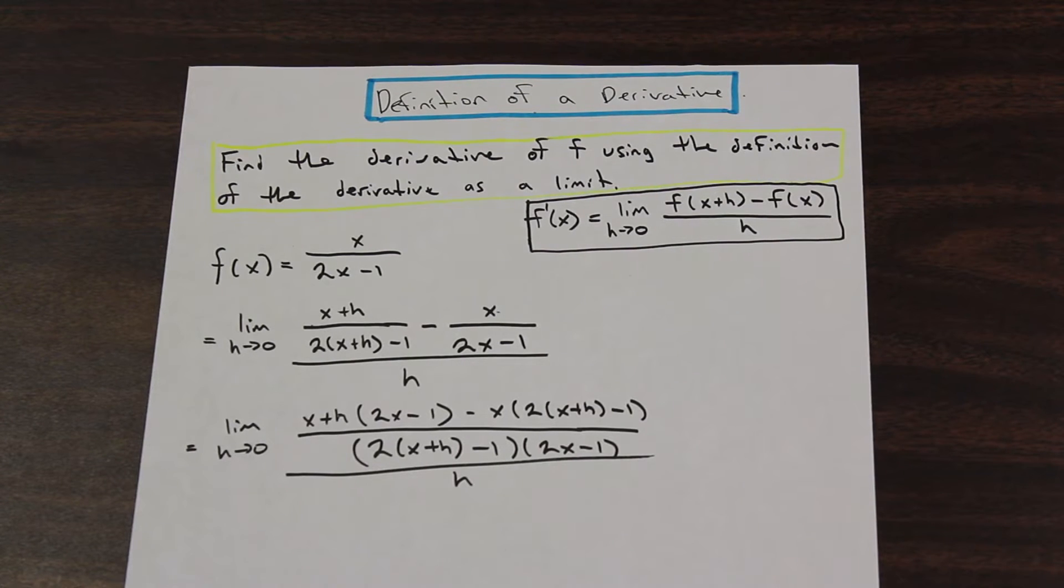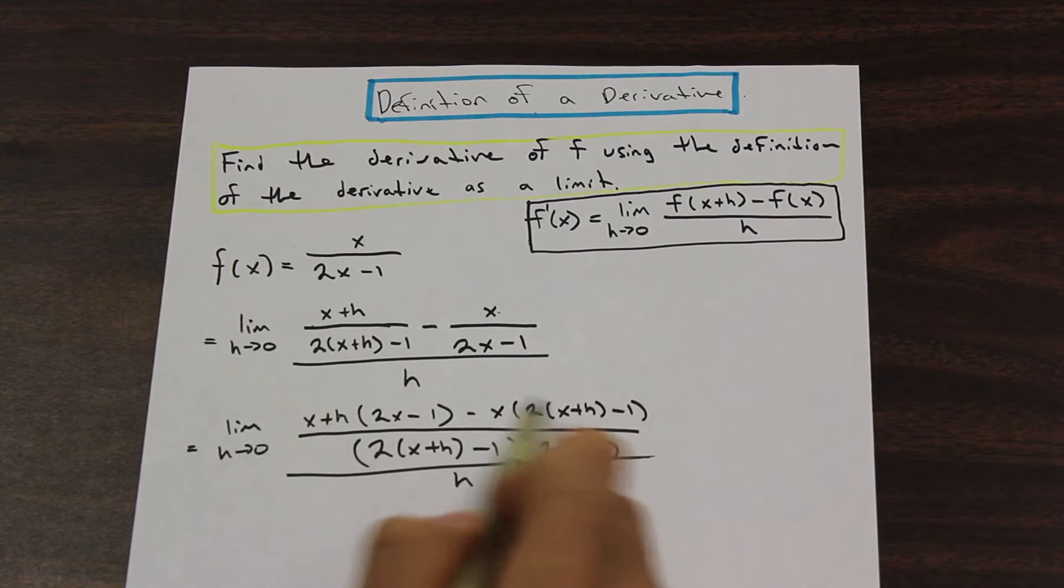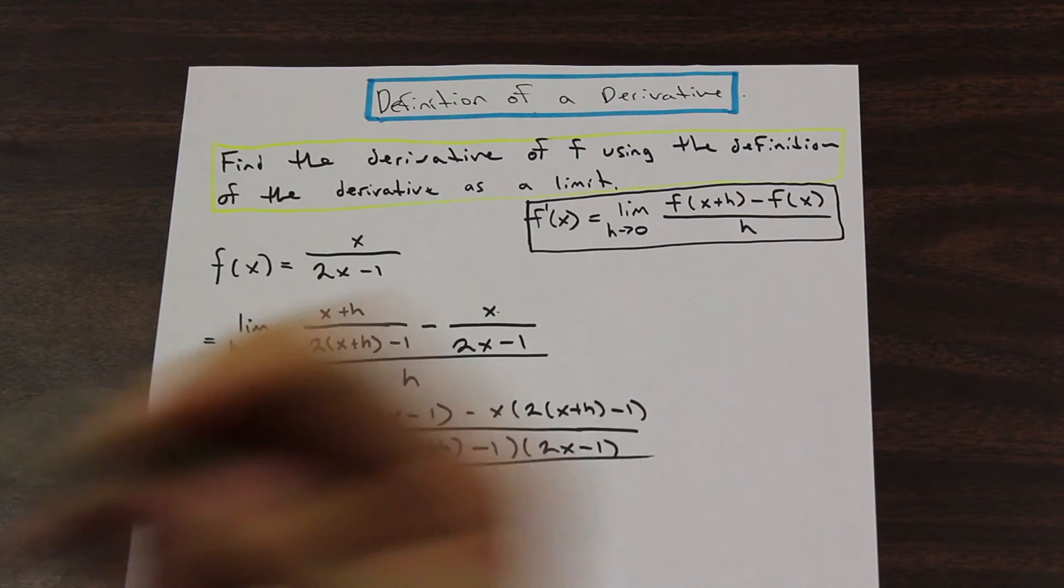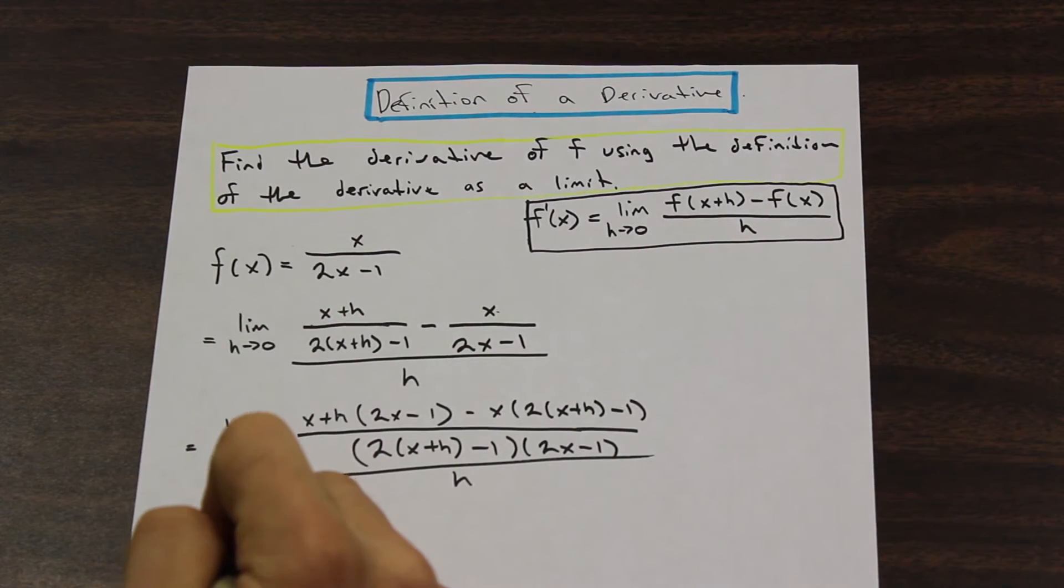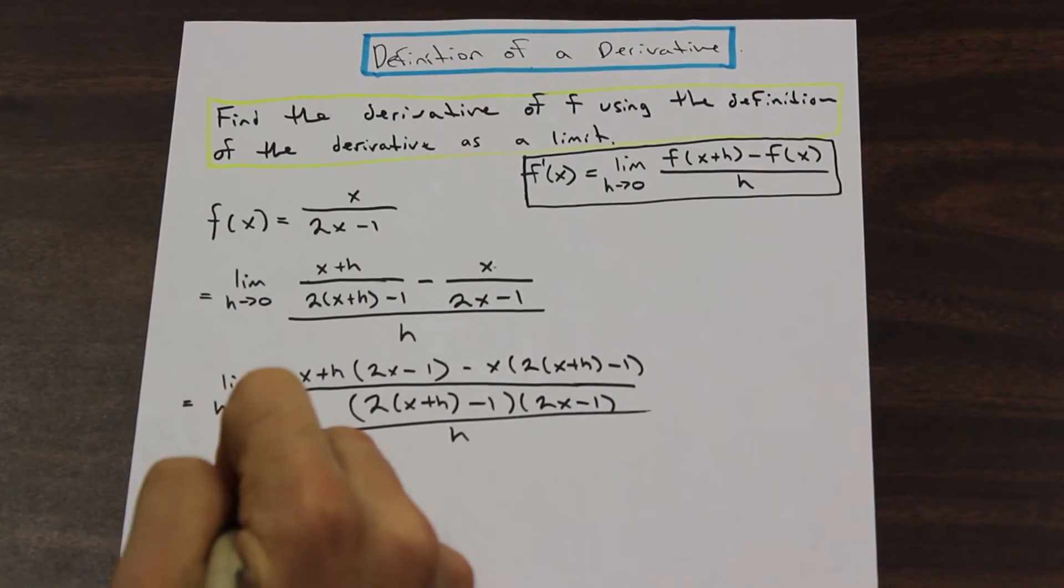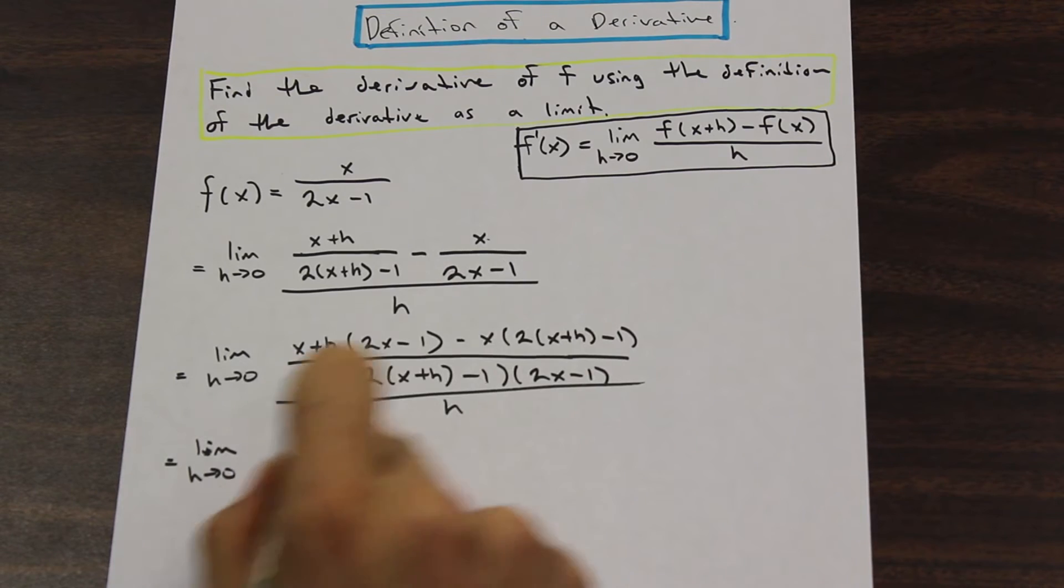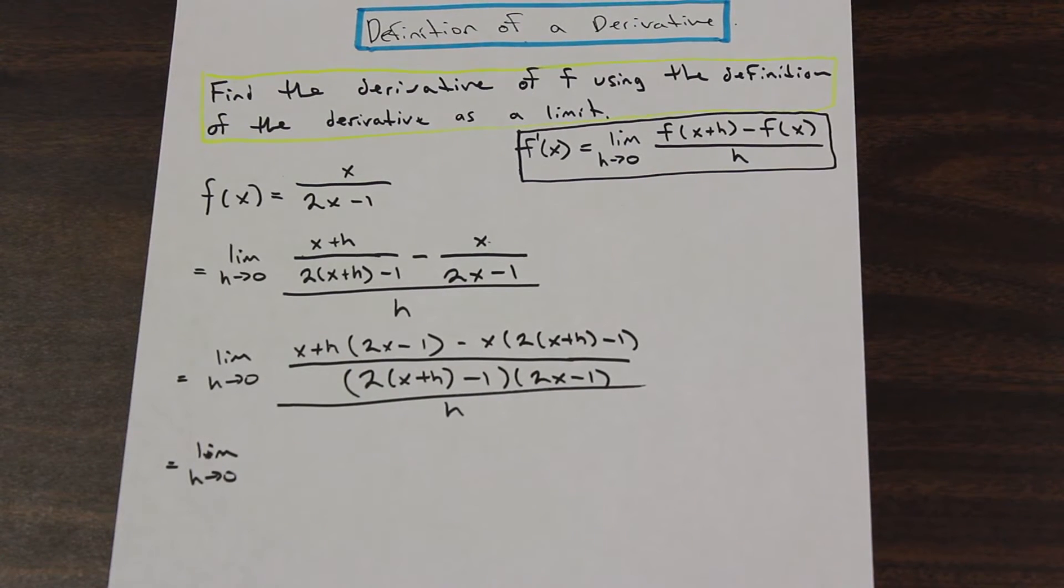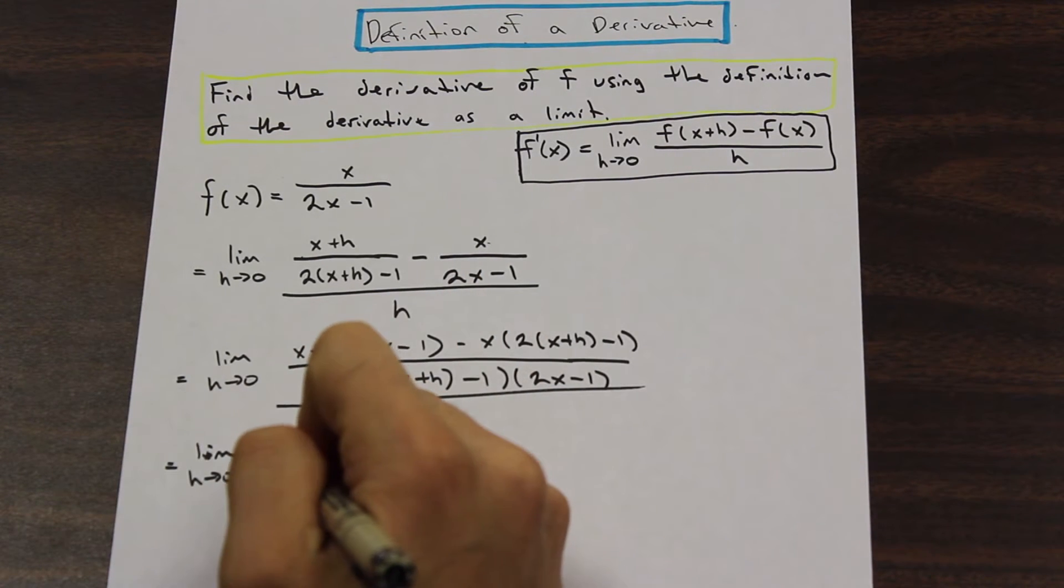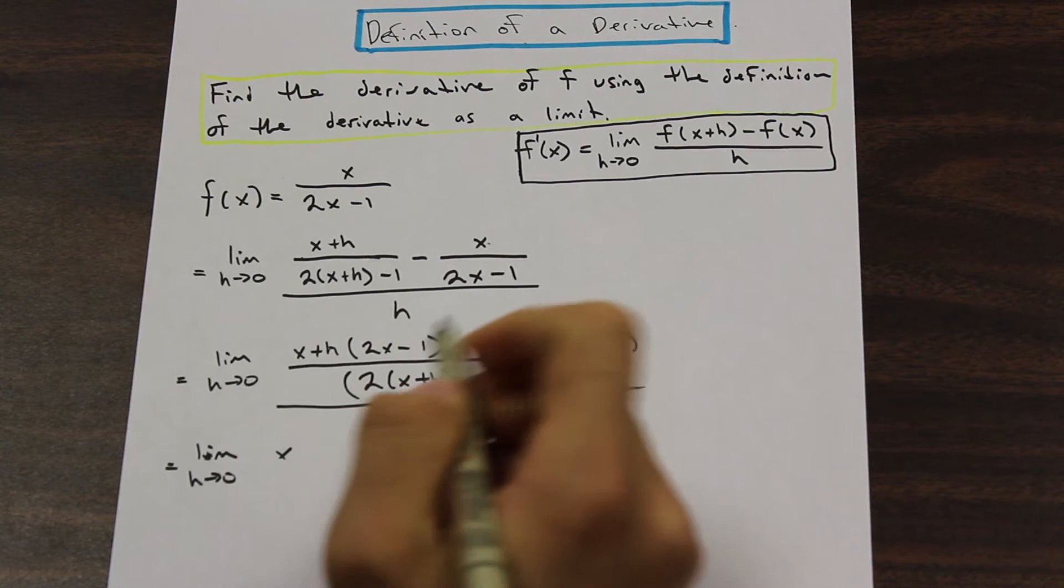So we've gone ahead and we've started to clean this up a little bit. Now, the next step I would suggest when we're dealing with something like this is to just start expanding on the numerator on the top here. And we'll see that in most of these types of questions, types of exam questions, a lot of stuff on the top will start to cancel once we start to simplify. So let's start doing that.